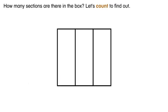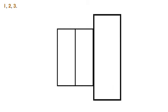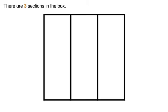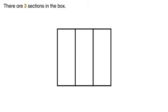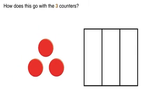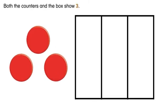How many sections are there in the box? Let's count to find out. One, two, three. There are three sections in the box. How does this go with the three counters? Both the counters and the box show three.